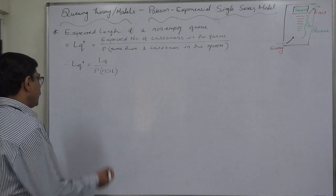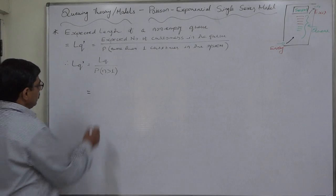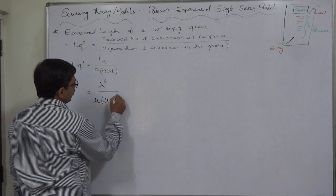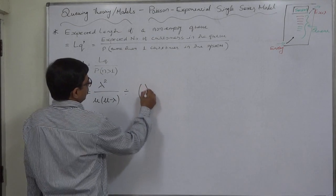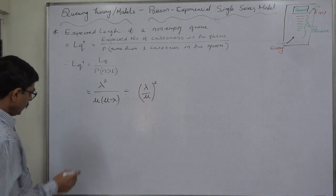Now what was the formula we derived for lq? That was lambda square upon mu into mu minus lambda, divided by lambda upon mu square.